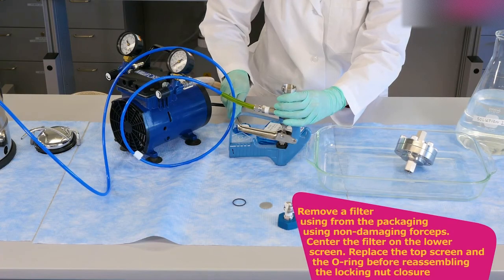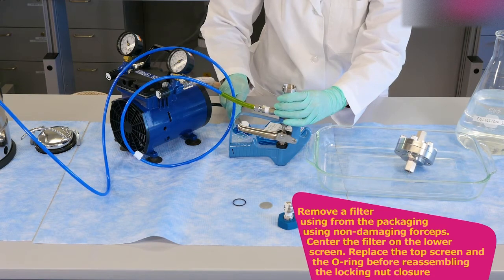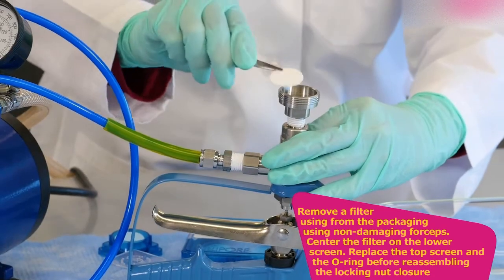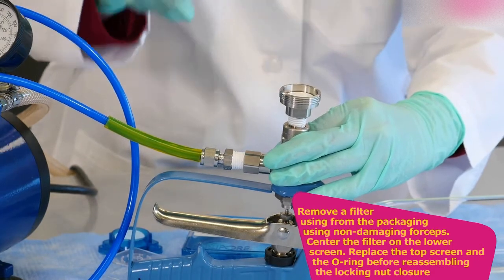Remove a filter from the packaging using non-damaging forceps. Center the filter on the lower screen. Replace the top screen and the O-ring before reassembling the locking nut closure.